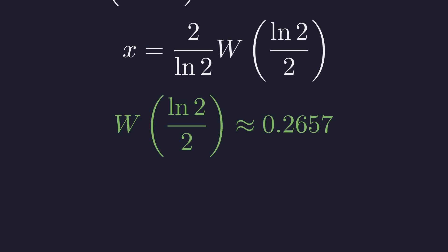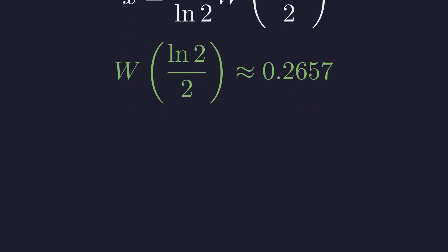The value of the W function for our argument is approximately 0.2657. Plugging this in yields the numerical value of our third solution, approximately 0.7666.